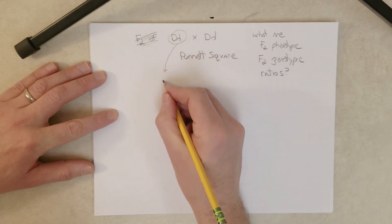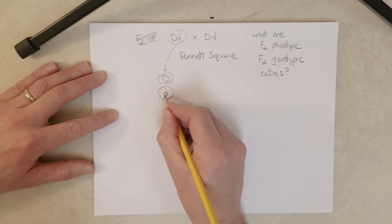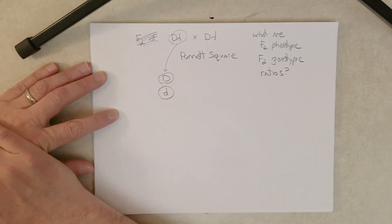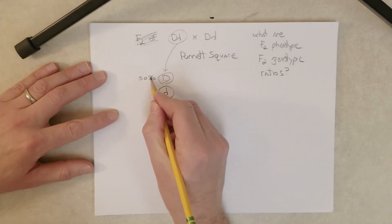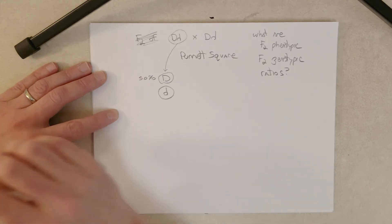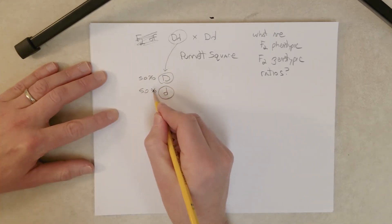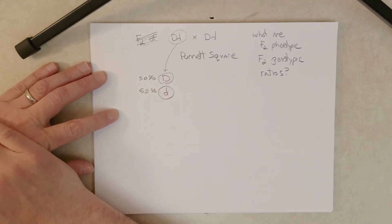So this parent right here can produce gametes with a big D allele and gametes with a little d allele. And because of Mendel's postulate on segregation, we know half of the gametes will be big D and half will be little d, right? Because segregation says the alleles will separate from one another and gametes will inherit one or the other with equal likelihood.